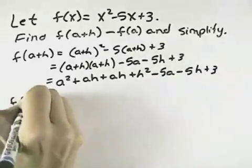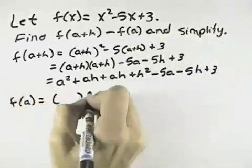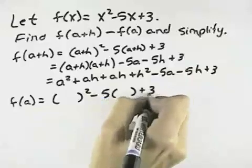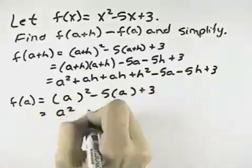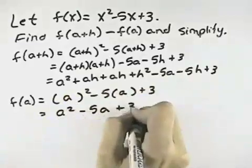If we find f of a, that's the same thing, take our equation but remove the x's. We'll replace the x's with an a this time to get a squared minus 5a plus 3.